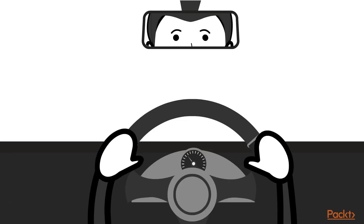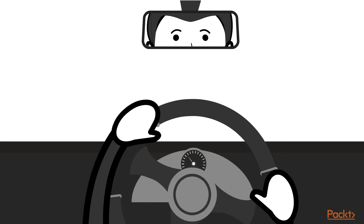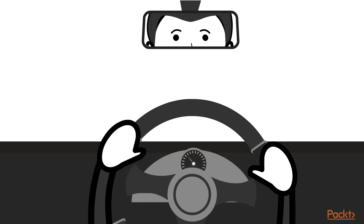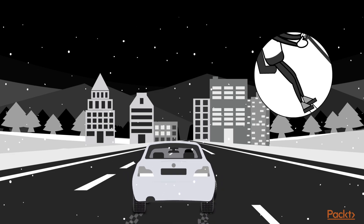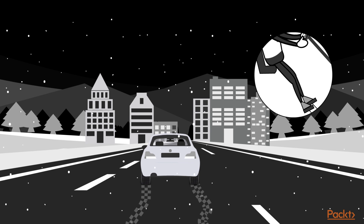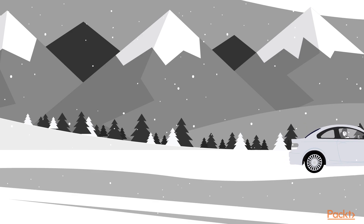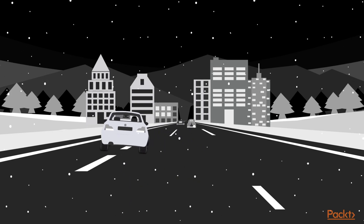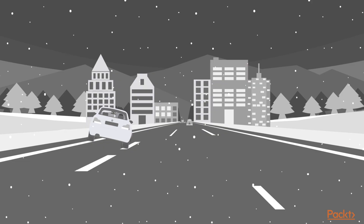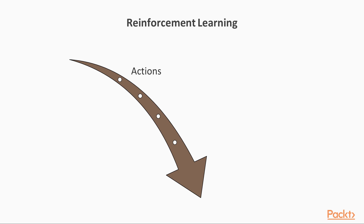At first you can only try random changes, like steering a little left or right or braking. But once you start observing the outcomes, you start to learn that some actions are more appropriate in certain situations than others. For example, if you get too much speed, you should slowly brake back to slow speed because otherwise you might slide off the ice. The reinforcement learning means that the system will start to associate actions with positive rewards, thus reinforcing the value of those actions over time.